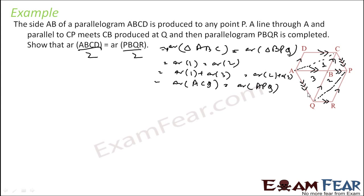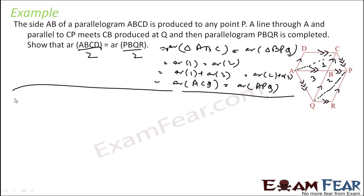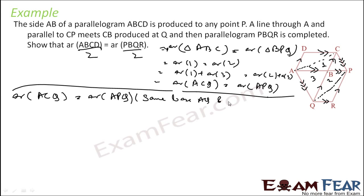We notice ACQ and ABQ are both on the same base AQ and they are in the same parallel because CP is parallel to AC, thus they are equal. So we can solve in this direction: area of ACQ equals area of ABQ by same base AQ, and we can save balance.